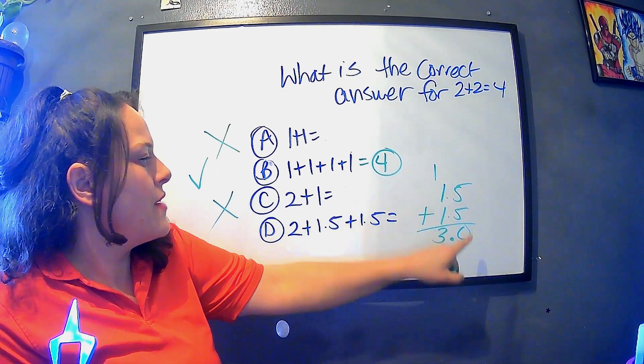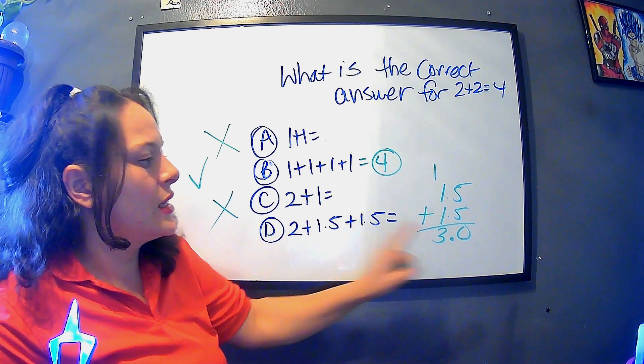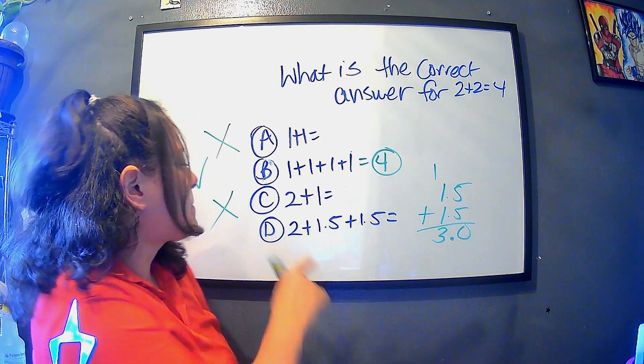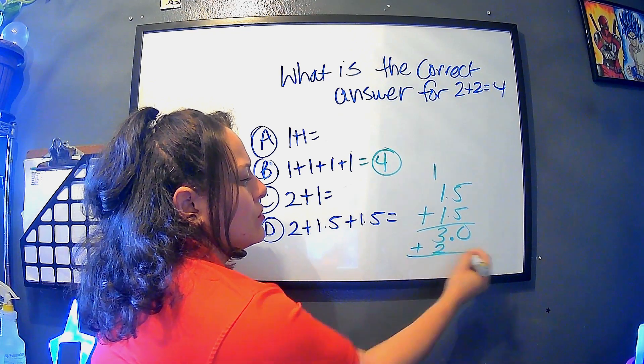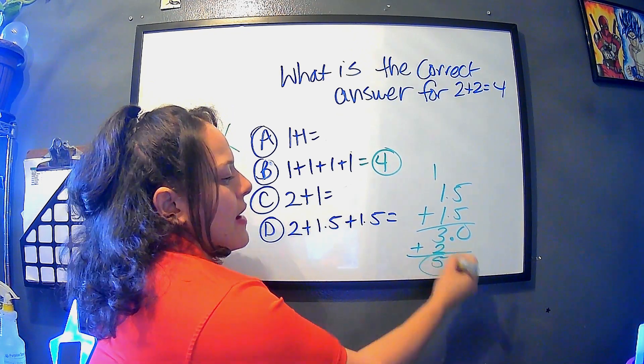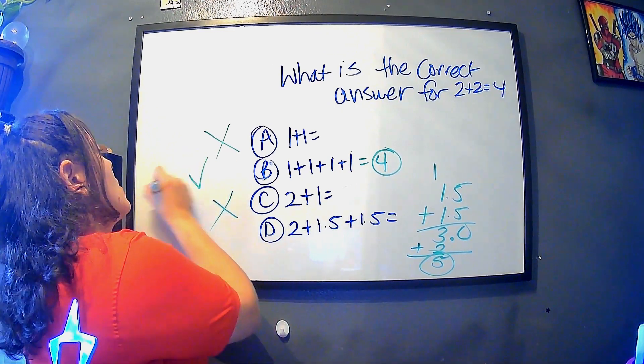We have 5 plus 5 equals 10. And then 1, 2, 3, 3.0. And then guess what? We also have to add a 2. So when we add that 2, it equals 5. So that would not be correct. So in this case, letter B would be the answer.